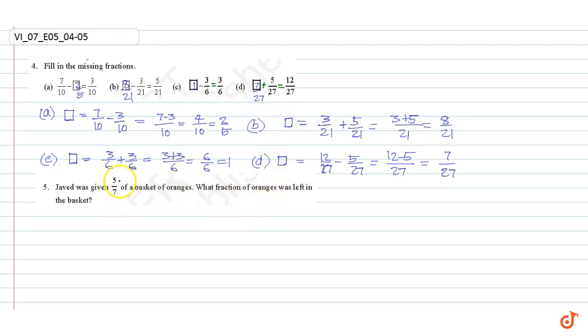These are our answers. Question number 5: Javed was given 5/7 of a basket of oranges. What fraction of oranges was left in the basket? Oranges Javed was given equal to 5 by 7 of a basket.